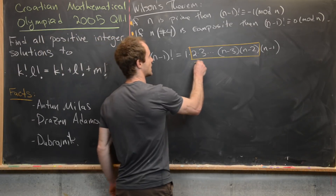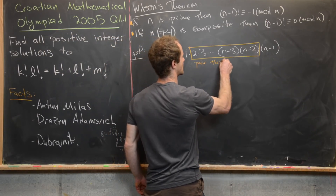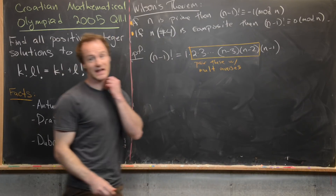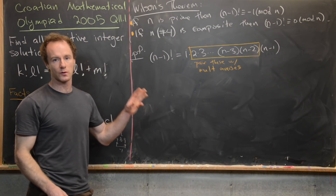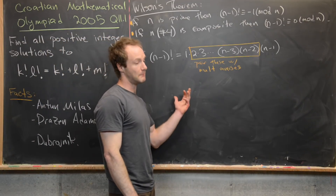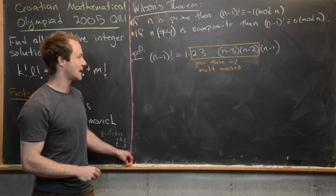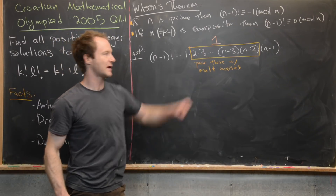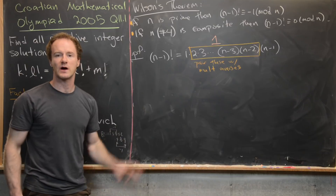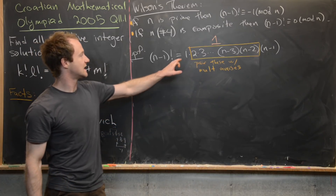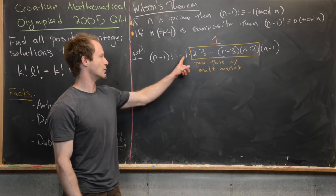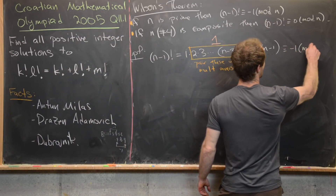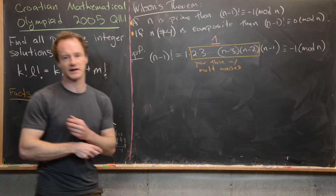We pair all numbers from 2 to n−2 with their multiplicative inverses. Since none of them are their own inverses, each pair multiplies to give 1. So multiplying everything together gives 1 × (n−1) modulo n. Since n−1 is congruent to −1 mod n, we conclude that (n−1)! is congruent to −1 mod n.